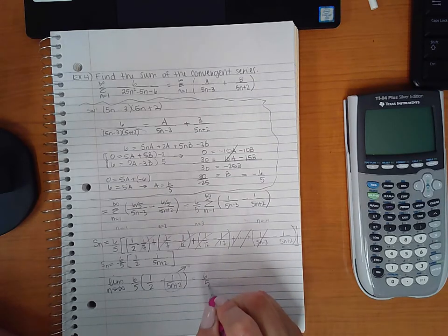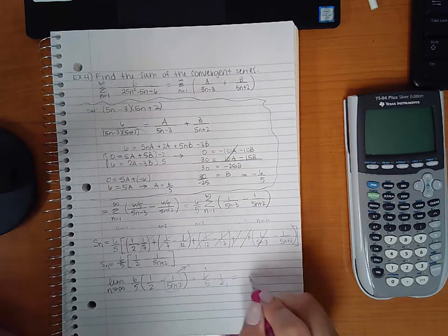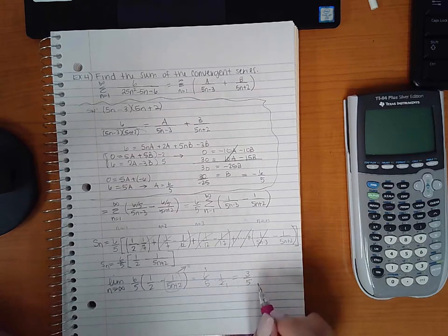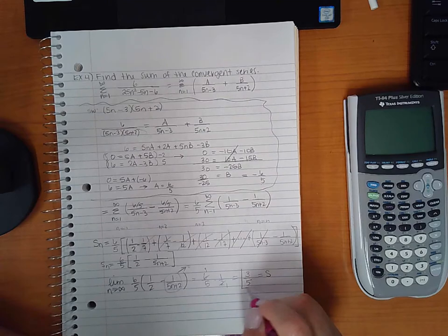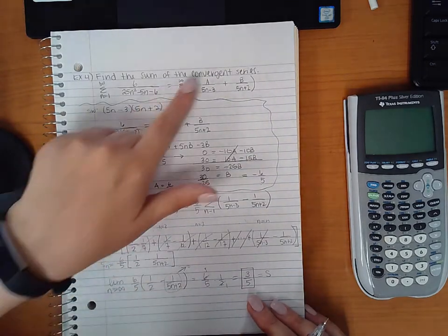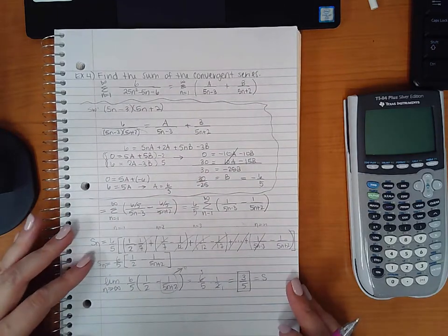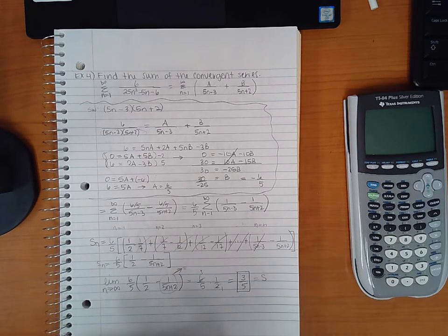So what I end up with is 6 fifths times 1 half, which is 3 fifths. So we do get a limit, and that limit is 3 fifths. So this is the sum, remember? Once you find that limit, that is the sum. And we knew we were going to get a sum because it told us from the very beginning that the series does converge. It was just a matter of manipulating what we had so that we could find that S. Thank you.